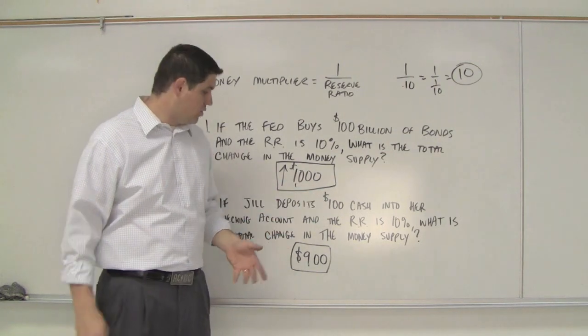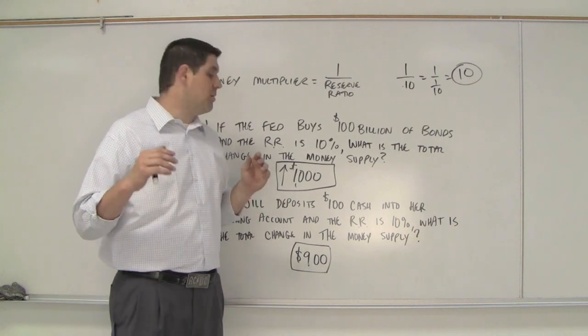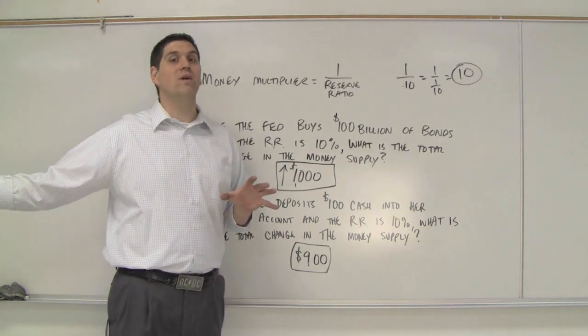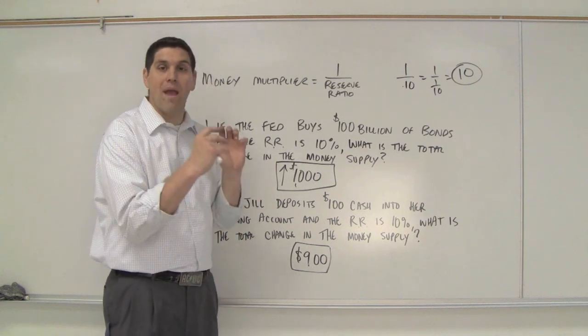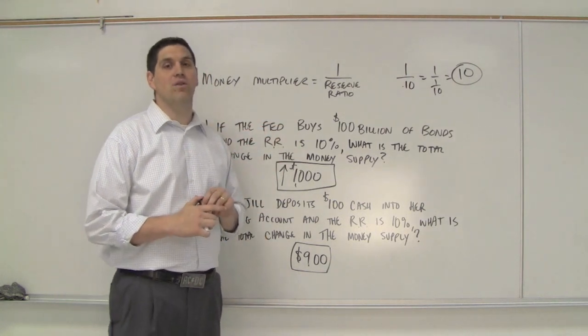The original $100 was already in the money supply. It was cash. So it's not $1,000. It's only $900 of new actual money created. Now, the demand deposits, the amount that's actually in banks is $1,000 because this $100 wasn't in the bank before and now it's in. So there's $1,000 demand deposits in banks, but the amount that was created was only $900.